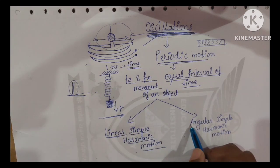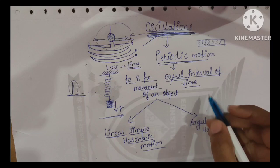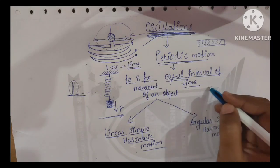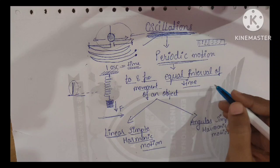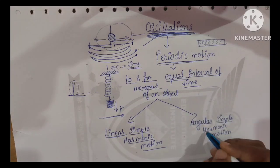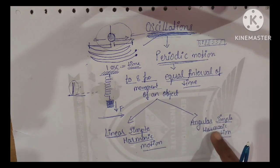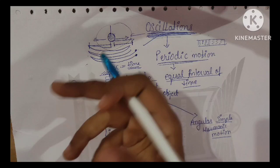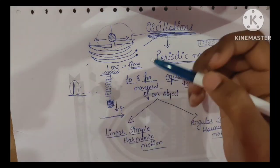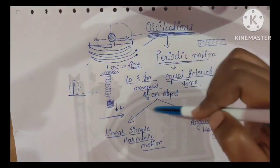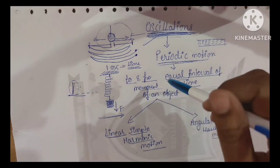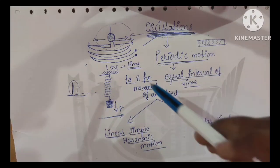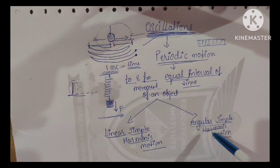Angular simple harmonic motion means the motion is in a circular or rotational form. For example, a clock or a pendulum — when you use this pendulum, the motion it undergoes is angular simple harmonic motion.